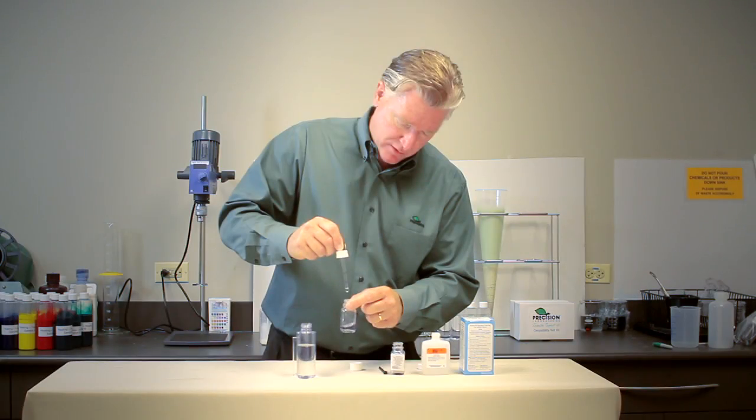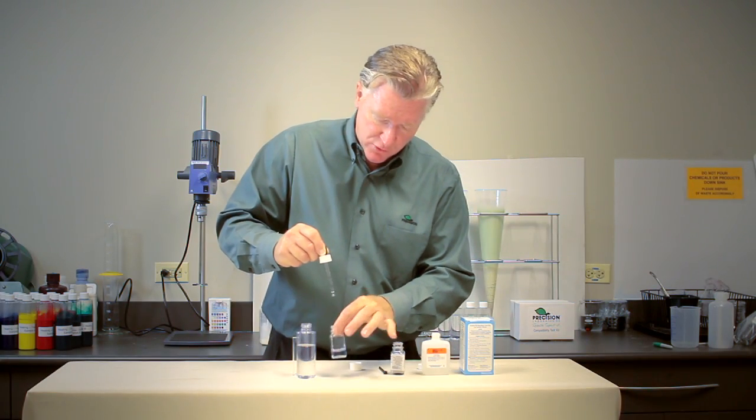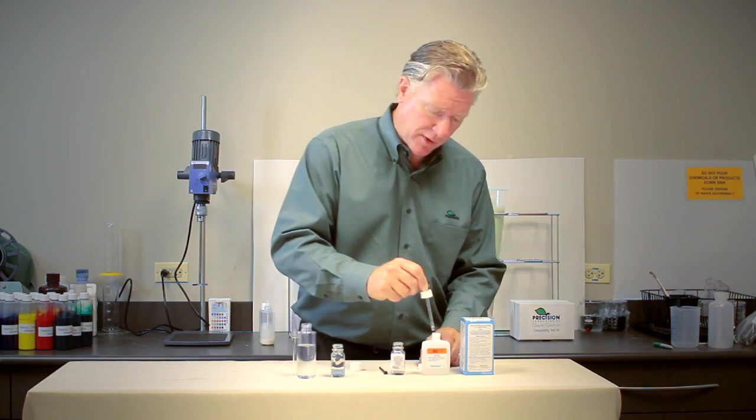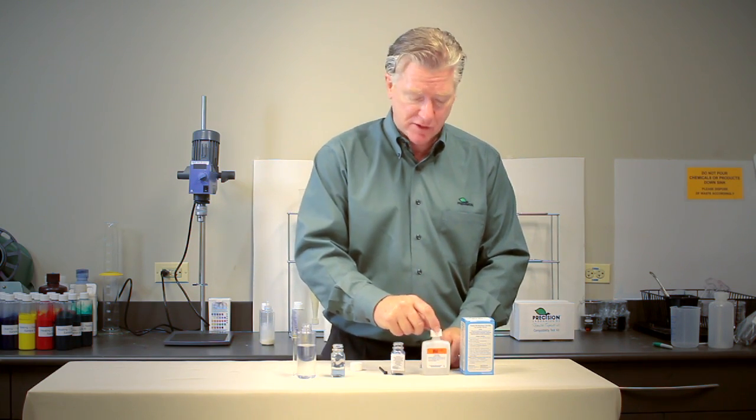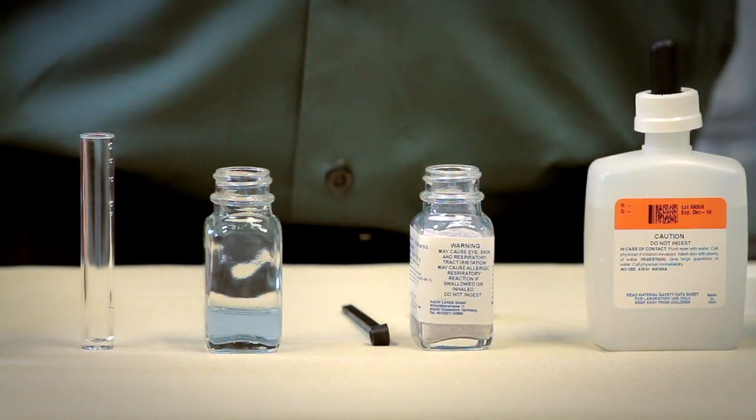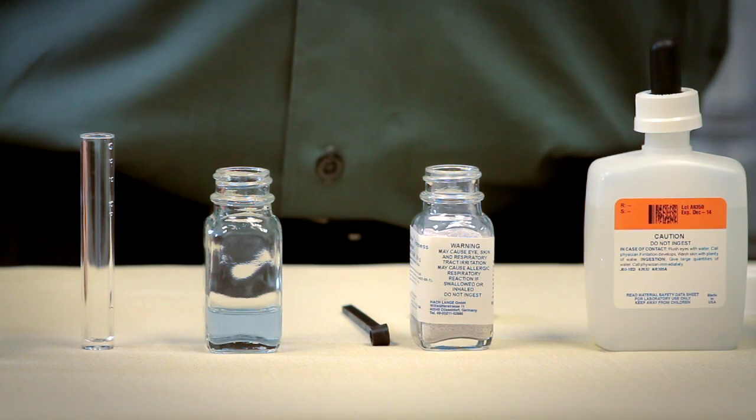19, 20, and there you go. 20 to 21 drops or about 340 to 357 parts per million. So this is pretty hard water and really would be problematic for glyphosate.